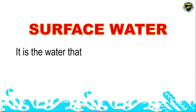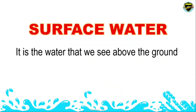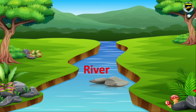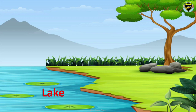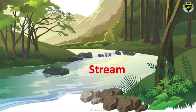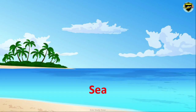Surface Water. It is the water that we see above the ground. We can consume it only after proper purification. Examples of surface water are river, lake, pond, stream, and sea.